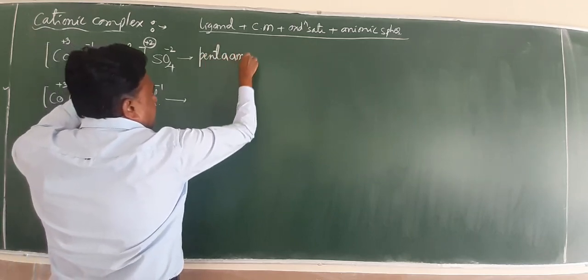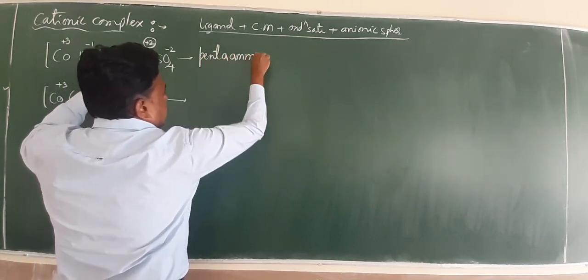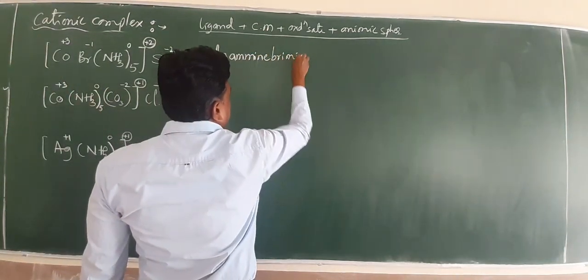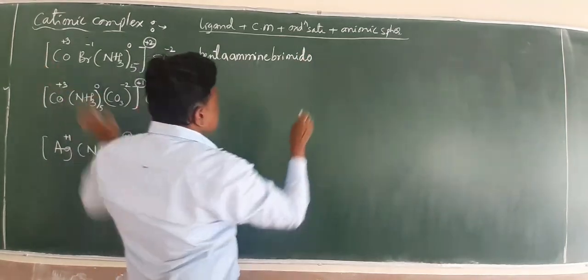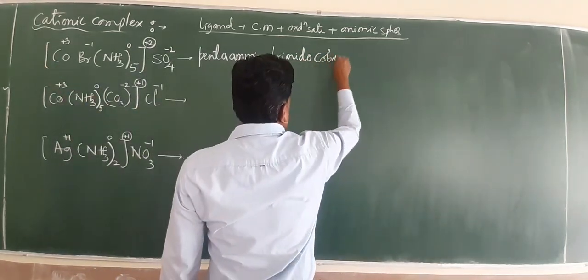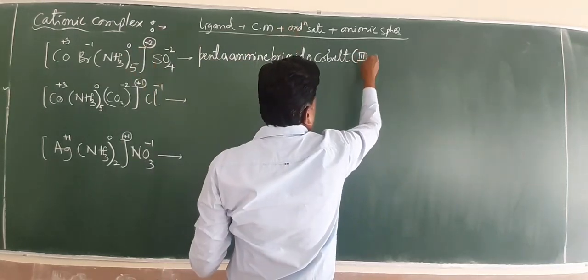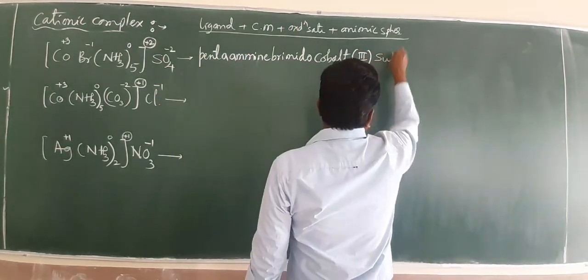Pentamine. Br is a bromido. Central metal is cobalt. Oxidation state is 3.